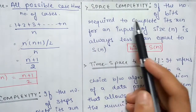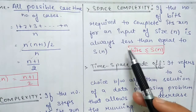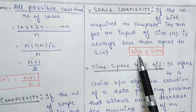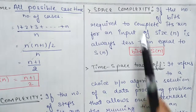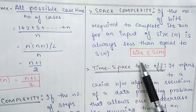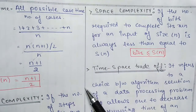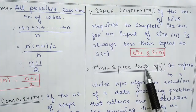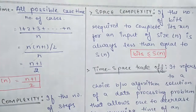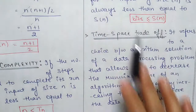Space complexity S(n): if the number of bits required to store data for an input of size n is always less than or equal to S(n), that is our space complexity. The key formulas are: number of steps ≤ T(n) for time complexity, and number of bits ≤ S(n) for space complexity. These expressions allow you to convert between the two definitions easily.